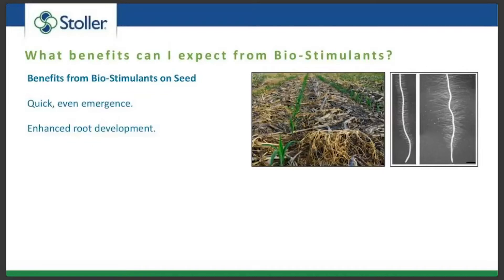Another benefit is enhanced root development. A seedling has a small root system starting its life cycle, and the more fine root hairs that develop, the more nutrients can be taken up from the soil. The average plant explores roughly about 3.5 percent of the soil rhizosphere. If we can increase root mass and root growth by 20, 30, or 40 percent, it's conceivable we could be exploring four, four-and-a-half, maybe five percent of the soil rhizosphere.